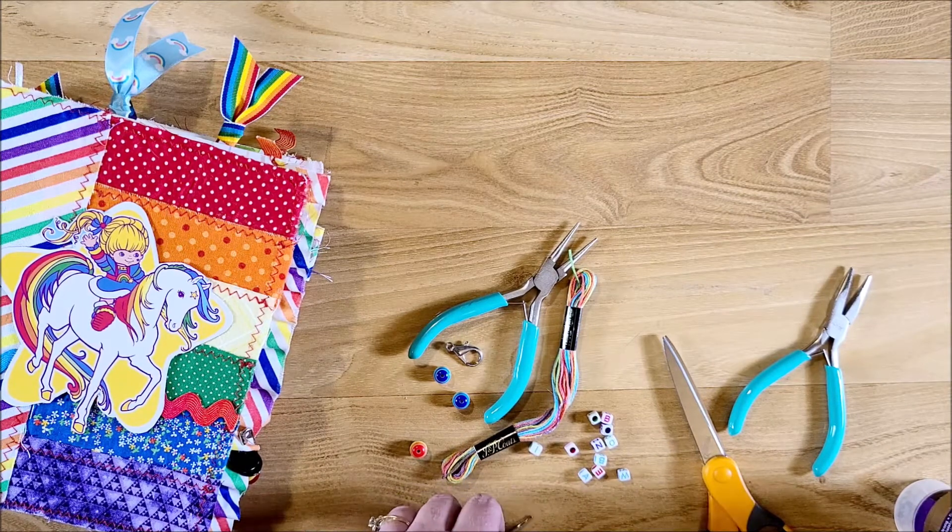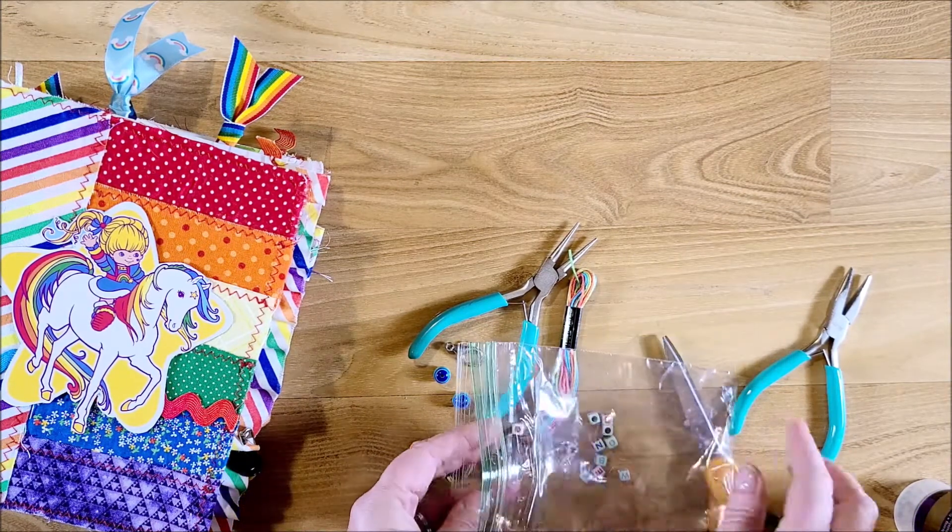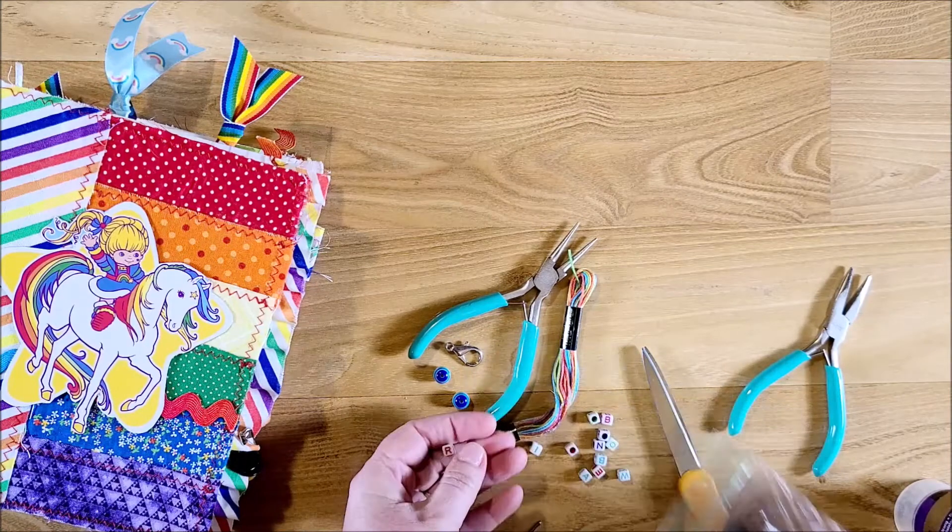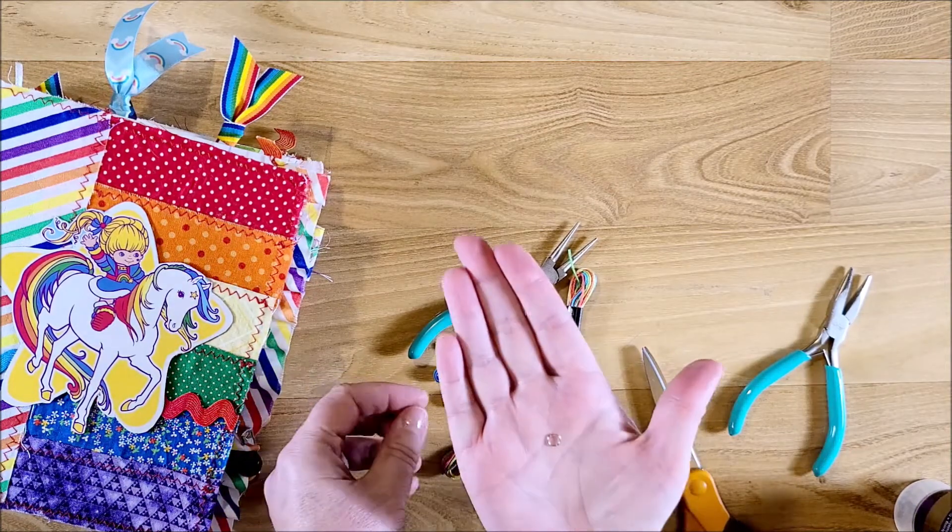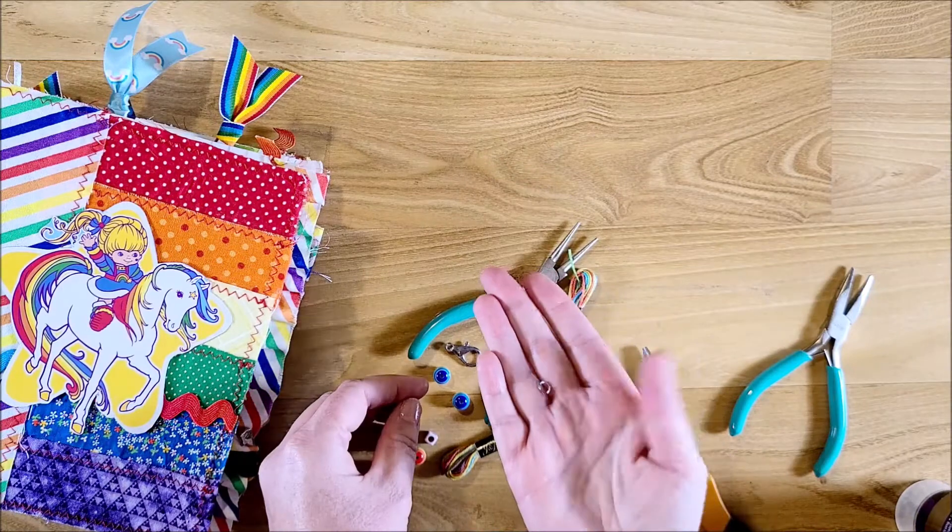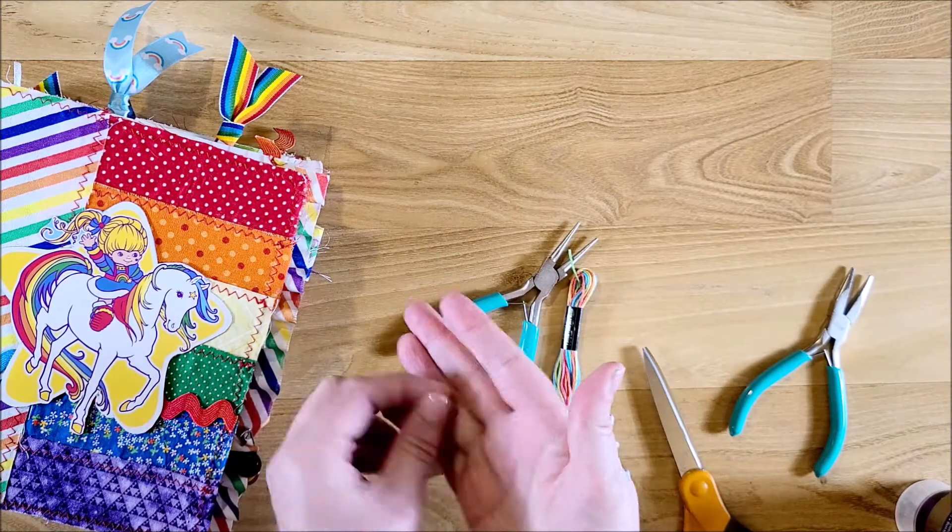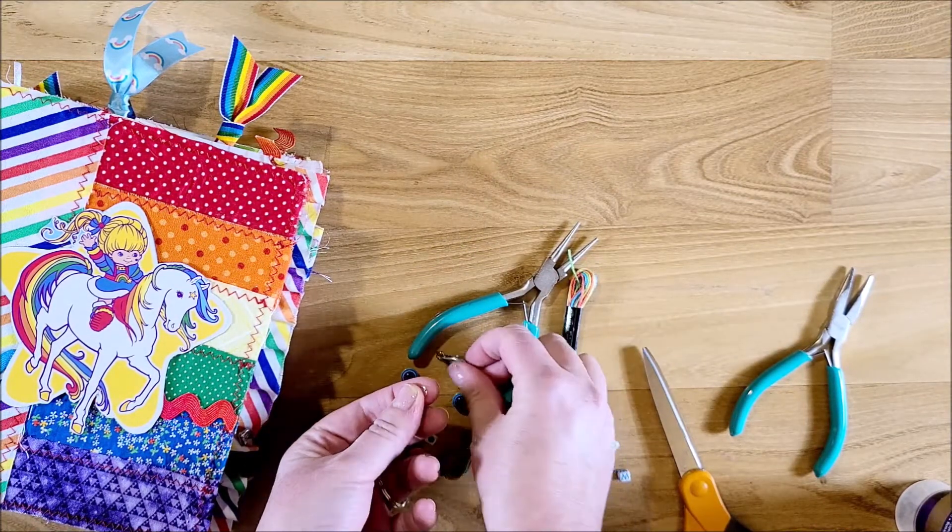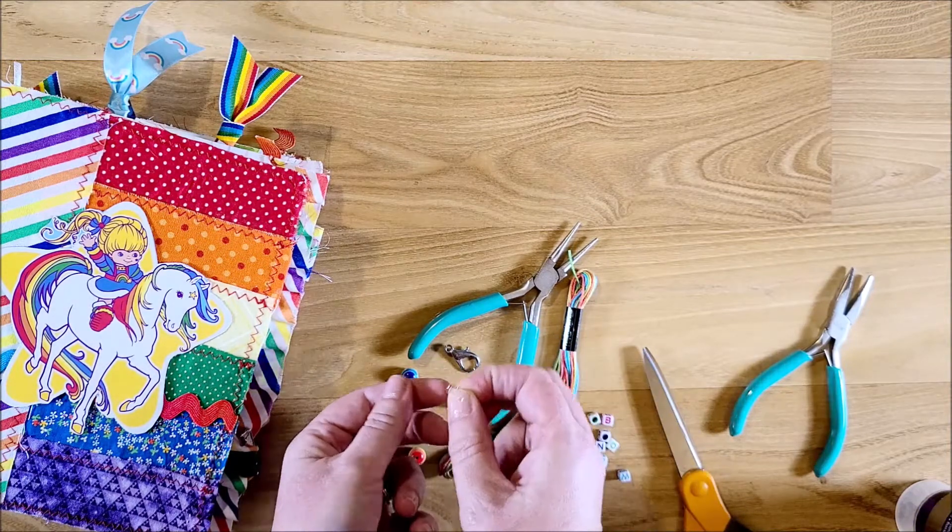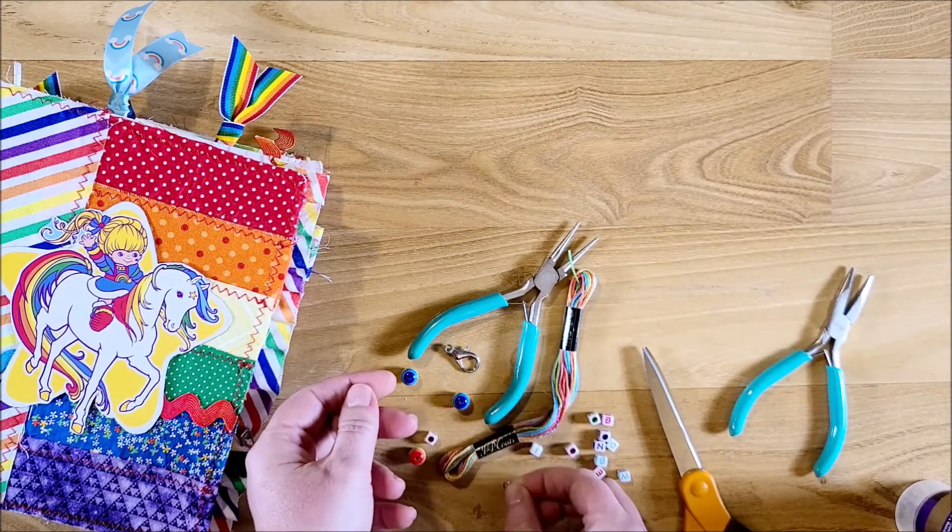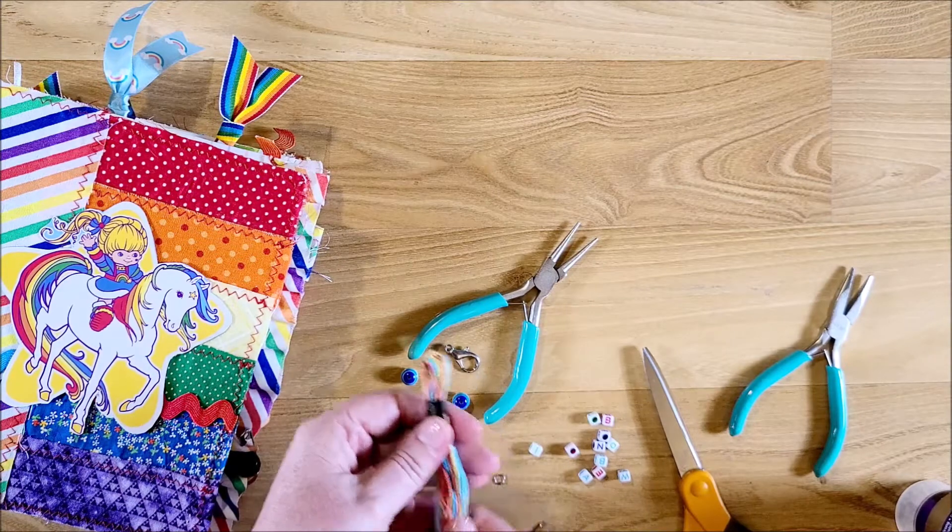And then you also need one little jump ring. And that is what I used to put it onto the lobster clasp. I tied it on to the jump ring and then put the jump ring onto the lobster clasp.